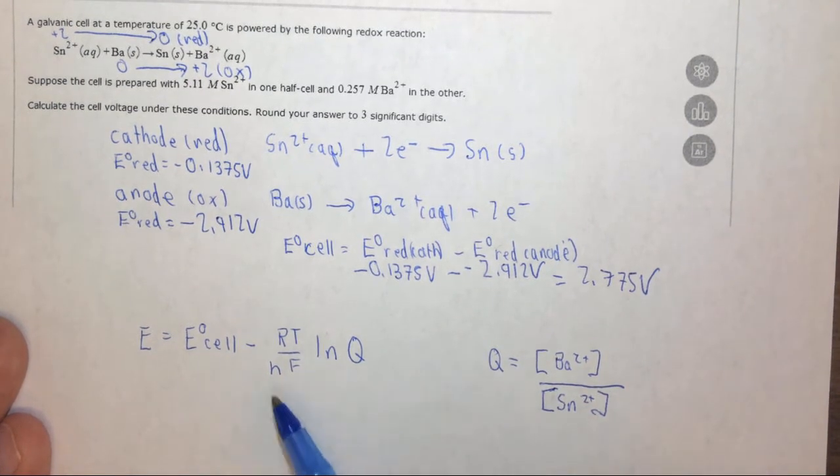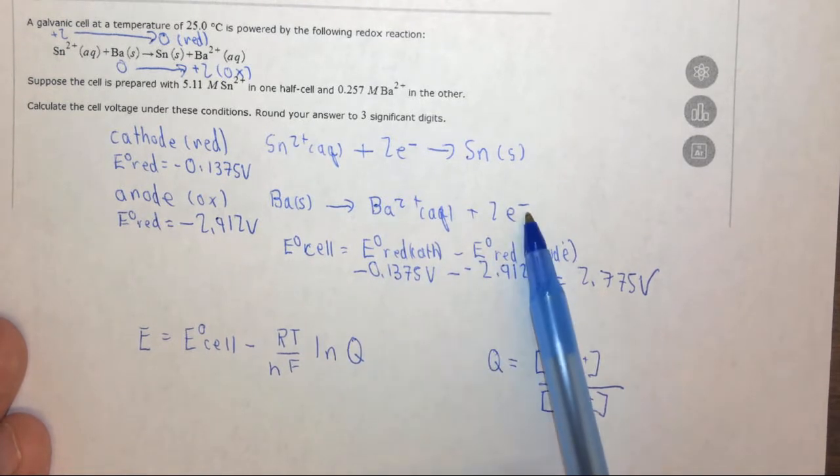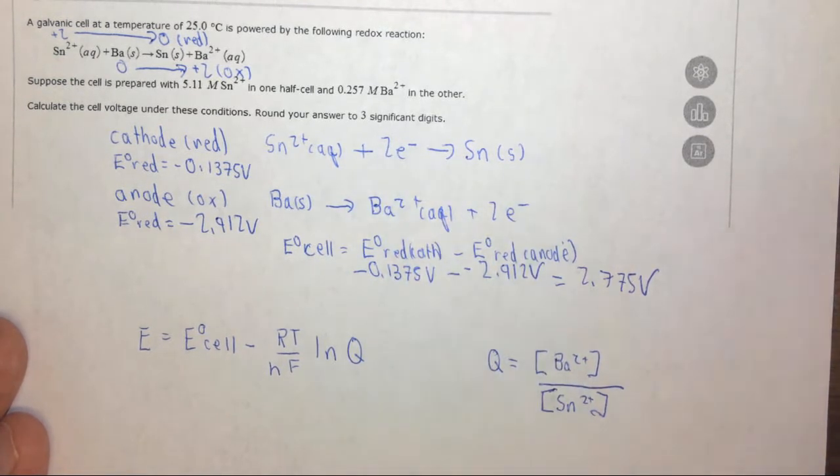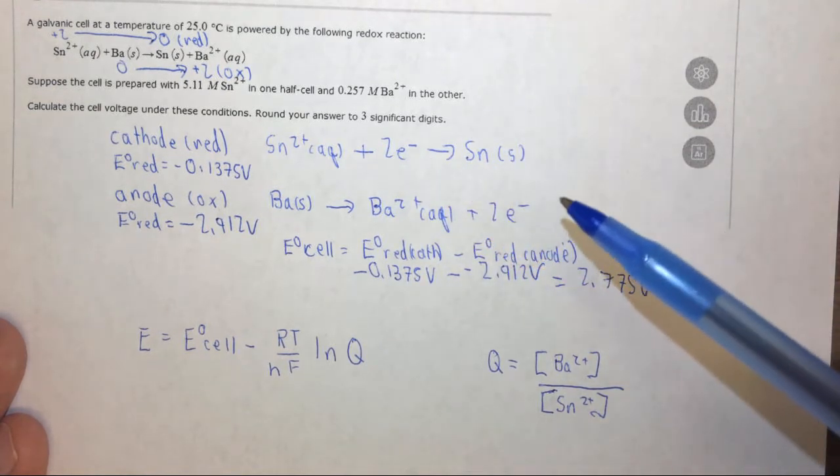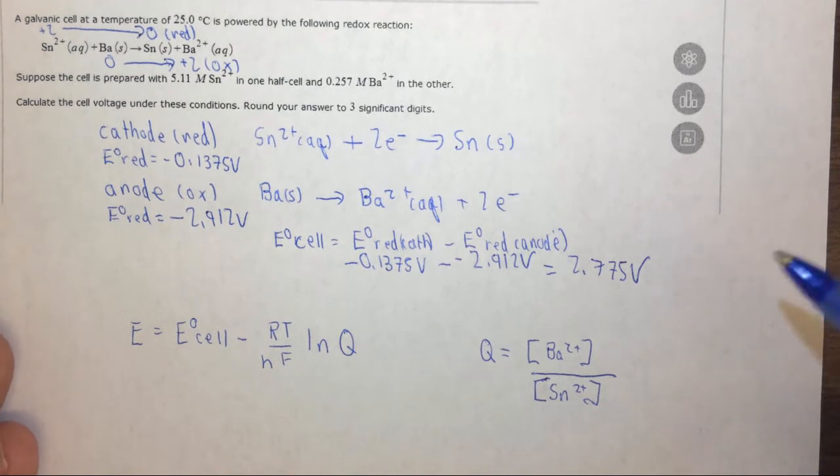We also know n because we've transferred two electrons in both cases, so they will cancel out, so when we balance it up we are transferring the two electrons. So that's basically a couple of things we figured out.